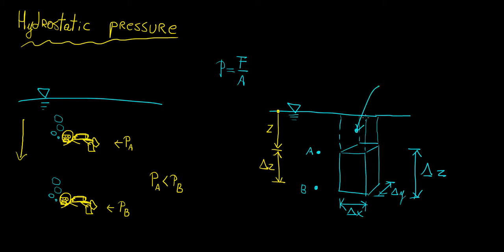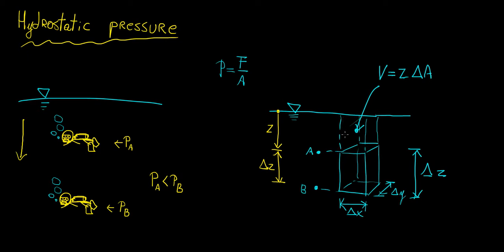The volume of the fluid column is going to be different for both A and B. Point A is across the upper plane, and point B is across the lower plane. The volume above point A is going to have a height of z and some area delta A, where delta A equals delta x times delta y. The volume above point B is going to be that volume V plus some additional element delta V.